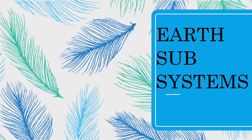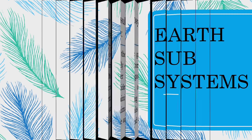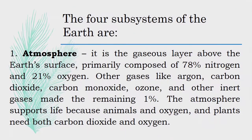The four subsystems of the Earth are: 1. Atmosphere. It is the gaseous layer above the Earth's surface, primarily composed of 78% nitrogen and 21% oxygen. Other gases like argon,